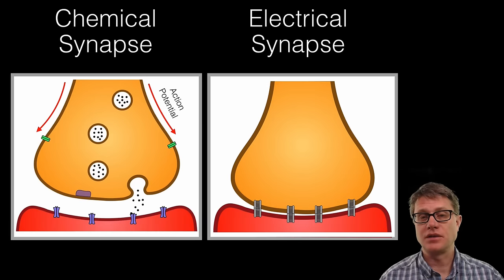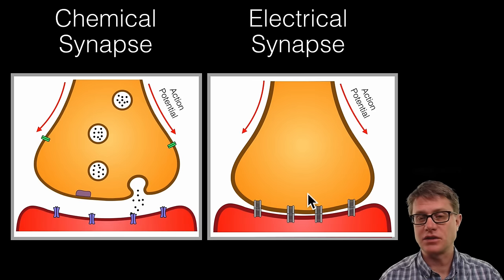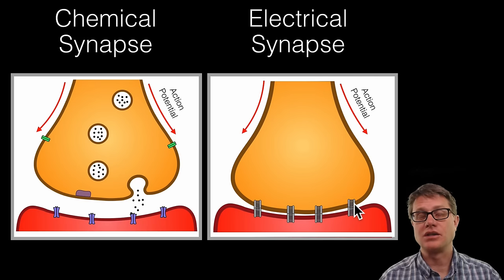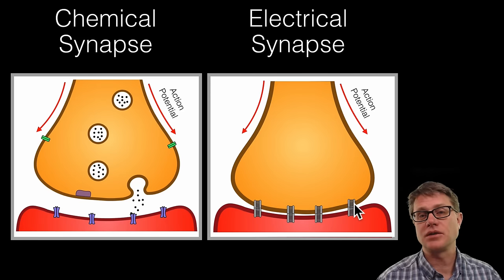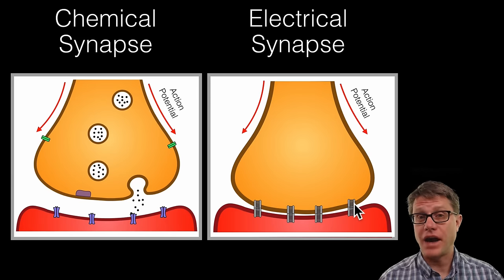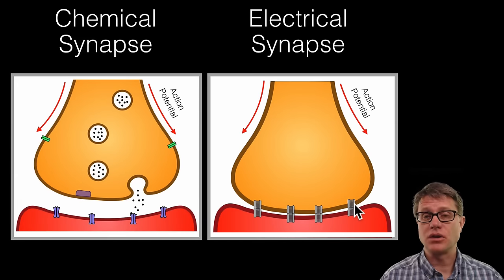We also have electrical synapses. In an electrical synapse an action potential is going to move down. And again that is triggered by these voltage gated channels. Once it gets to that synapse it is going to open up more voltage gated channels and the message is going to go. In electrical synapse if you have an action potential in the neuron before the synapse you are going to have an action potential in the one after. What is great about electrical synapses is that they are very, very fast. What is bad about them is that there is no control.